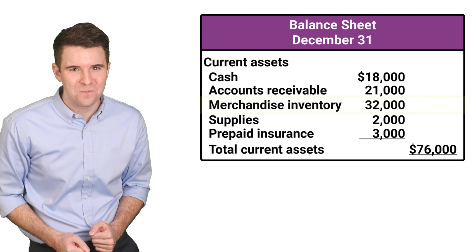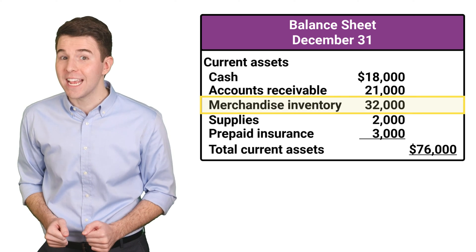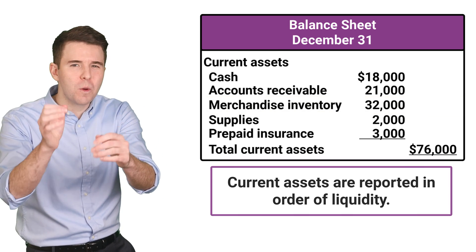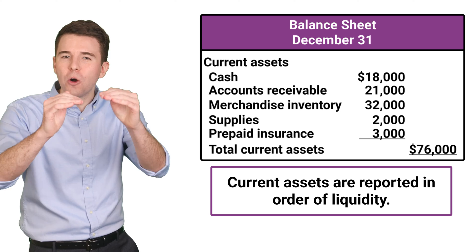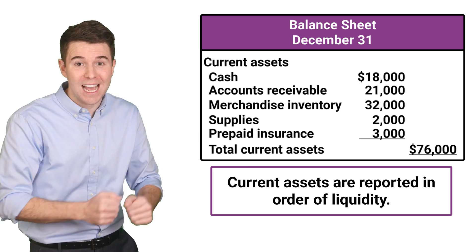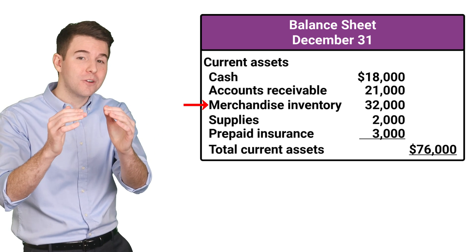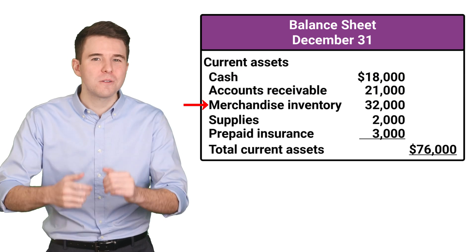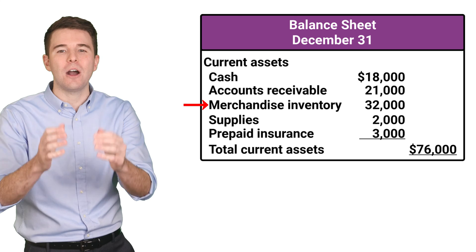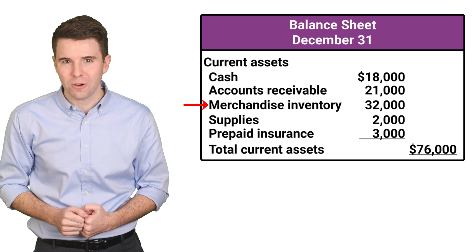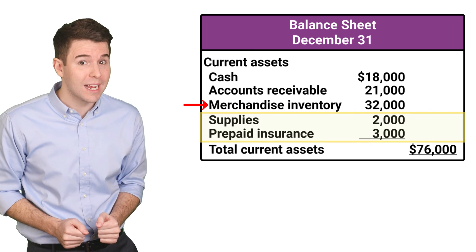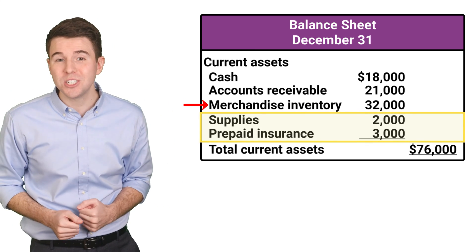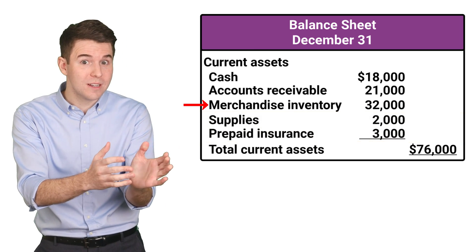So let's take a quick look at how we prepare a balance sheet for a merchandiser and report merchandise inventory. Merchandise inventory is reported as a current asset on the balance sheet. A balance sheet reports current assets in order of how quickly they can be converted to cash. So inventory usually is listed after cash and accounts receivable, because it is easier to collect cash from someone who already owes you money in accounts receivable rather than having to go out and sell inventory. However, inventory still comes before accounts like supplies and prepaid insurance, as those would be harder to sell or convert to cash.